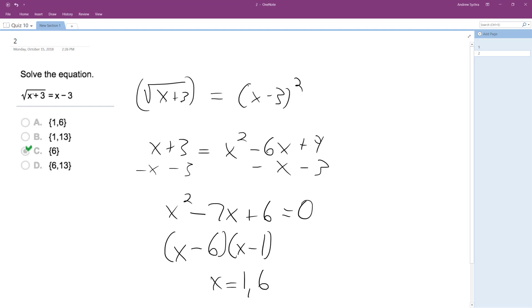But let's see if that works. So up here in the top, square root of 1 plus 3 is square root of 4, which is 2. And then 1 minus 3 is negative 2. 2 does not equal negative 2, so 1 does not work.